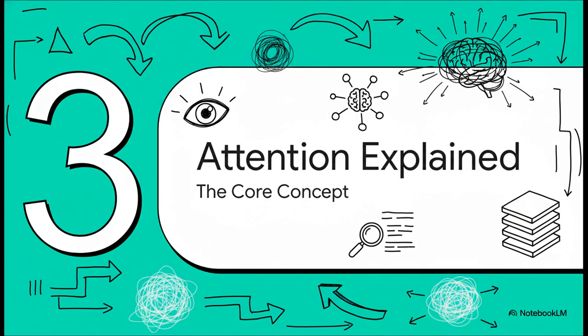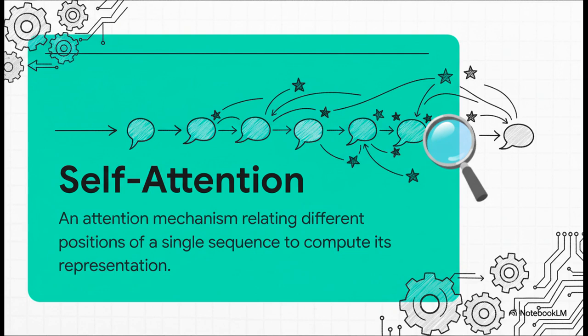So, what in the world is this attention that was suddenly all we needed? Let's break down the core idea, which the paper calls self-attention. It's brilliant. At its heart, self-attention is what lets the model look at an entire sentence all at once. And for any single word, it can figure out how important all the other words in the sentence are for understanding its specific meaning, right there in that context.